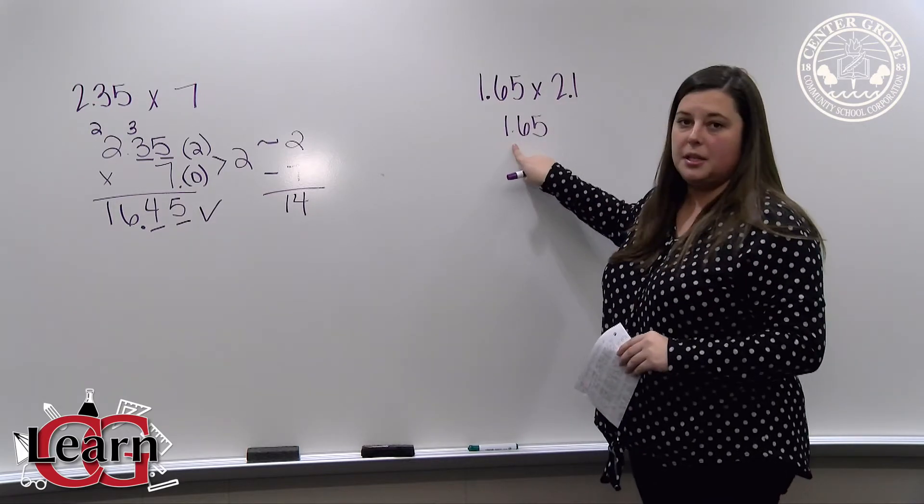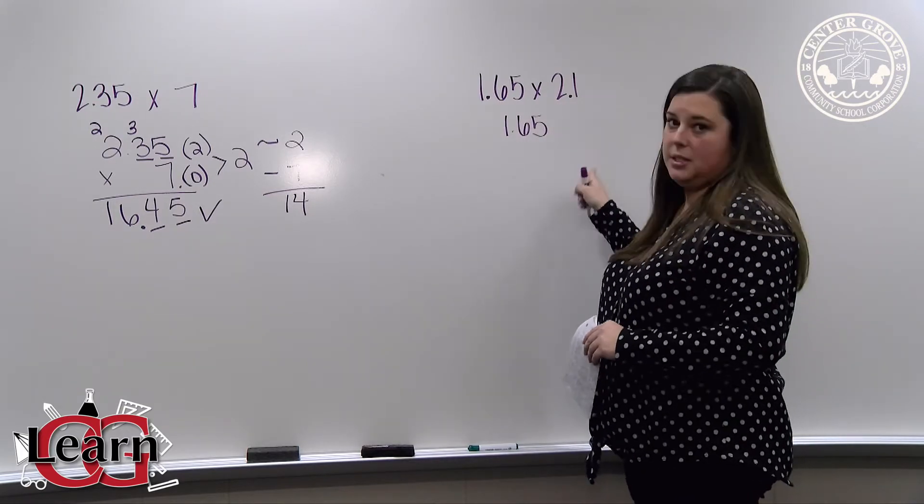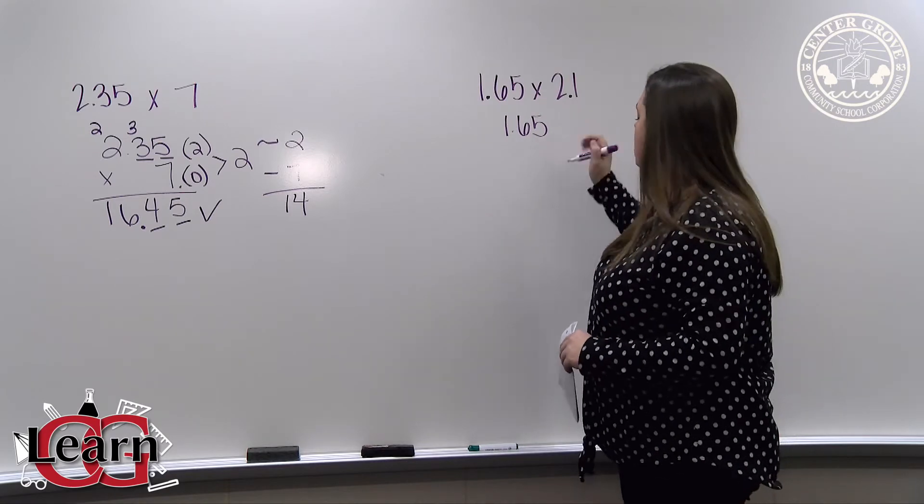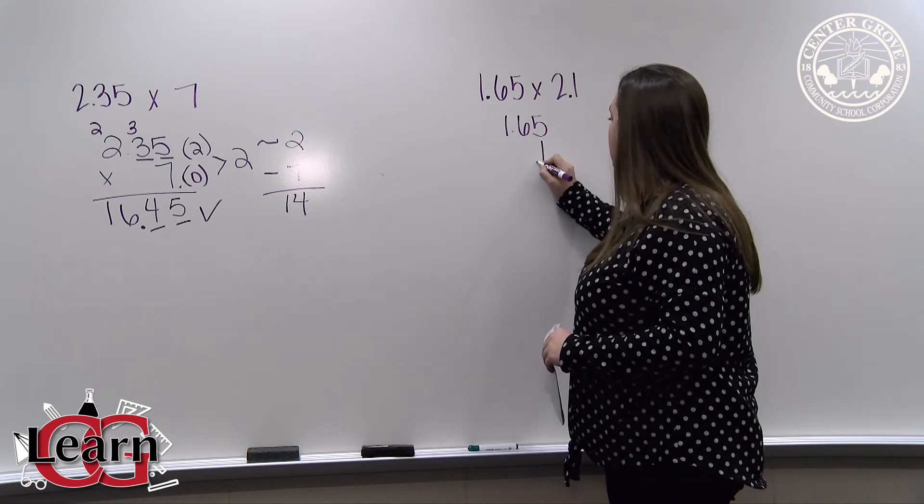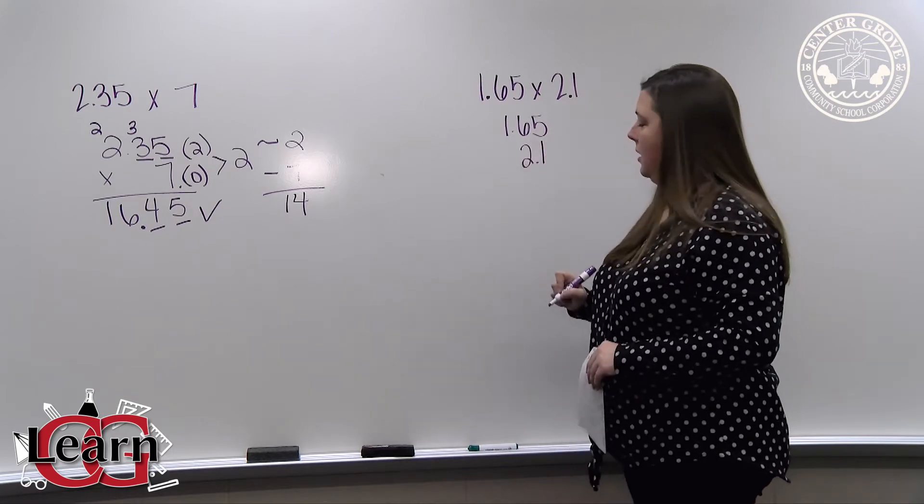Again, we do not line up our decimal points. Instead, we line up our digits from the right to the left. So 1 is going to be written directly under the 5 and 2 directly under the 6.